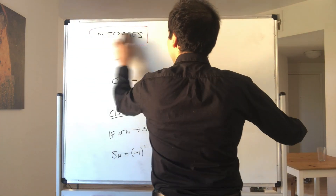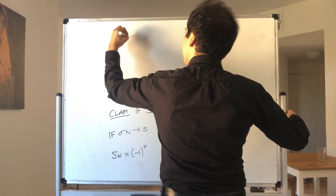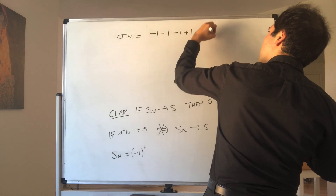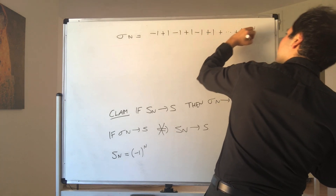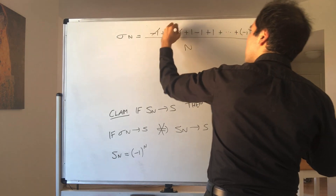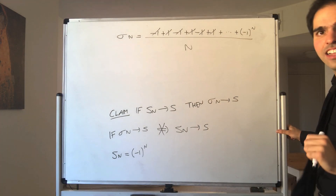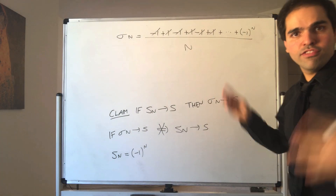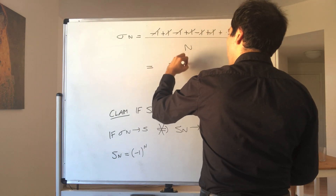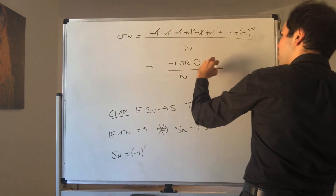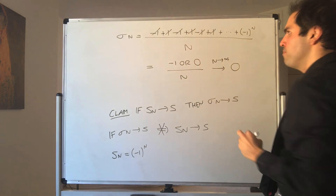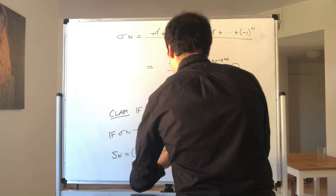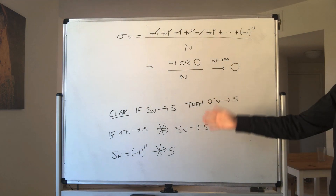Then what is σn? Well, σn is just the average: so (-1) + 1 + (-1) + 1 + (-1) + 1 + ... + (-1)^n, over n. Either everything cancels out and we get 0, or there's a -1 left and we get -1/n. So it's either -1 or 0 over n, but as n goes to infinity, the average goes to 0, but Sn itself doesn't converge — it diverges in some sense. So that's very strict.